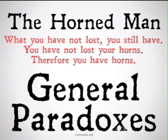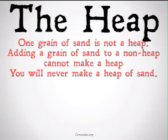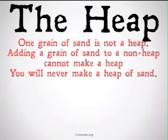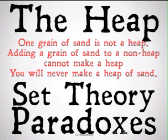We're going to be looking at general paradoxes in this first category — some paradoxes that wouldn't fit in any of the other sections. Next up, the paradox of the heap. We've already looked at this one: one grain of sand is not a heap; adding a grain of sand to a non-heap cannot make a heap. You'll never make a heap of sand. This talks about grouping of things — we're going to be talking about set theory paradoxes in conjunction with the heap and the sorites paradox.